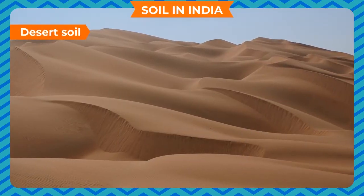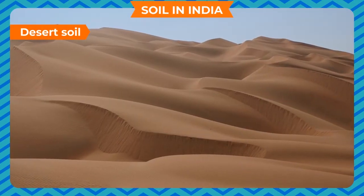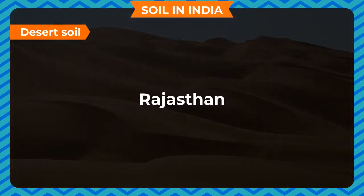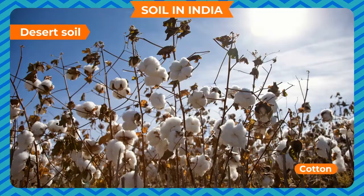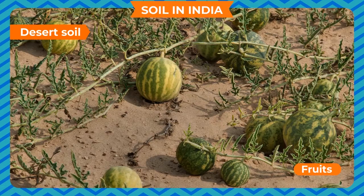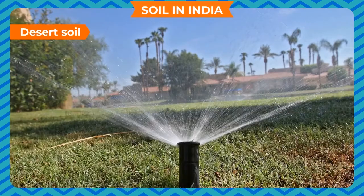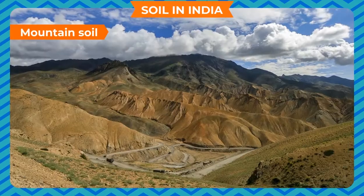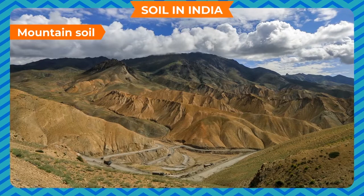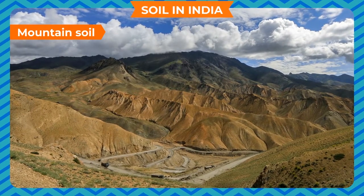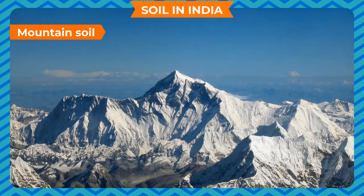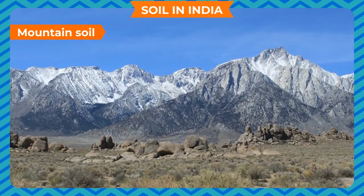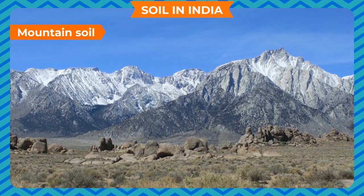Desert soil is sandy soil which cannot hold water and is found in Rajasthan. Growth of wheat, cotton and fruits is possible with suitable irrigation arrangements. Mountain soil is found in the Himalayan region, is rich in humus, but is often acidic which makes it unfit for proper cultivation.